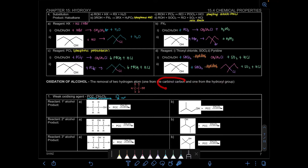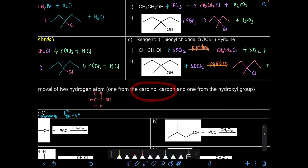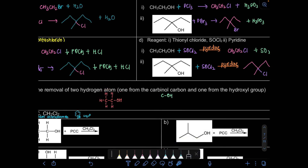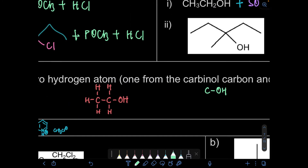So what is meant by carbonyl carbon? The carbonyl carbon is the carbon that contains OH. For example, given that this is ethanol because we have 2 carbons here. This carbon — is it bonded to any OH? It's not. But this carbon is attached to OH. So this is what we call our carbonyl carbon.